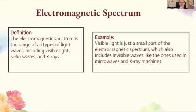The electromagnetic spectrum is the range of all types of light waves, including visible light, radio waves, and X-rays. Visible light is just a small part of the electromagnetic spectrum, which also includes invisible waves like the ones used in microwaves and X-ray machines.